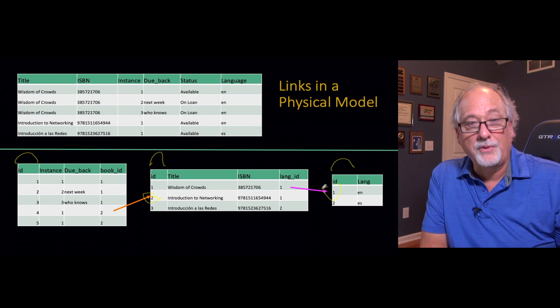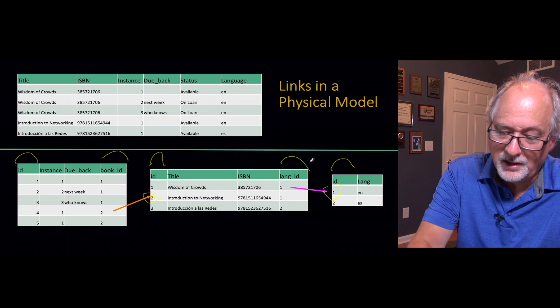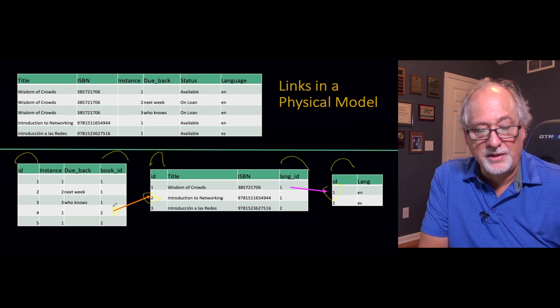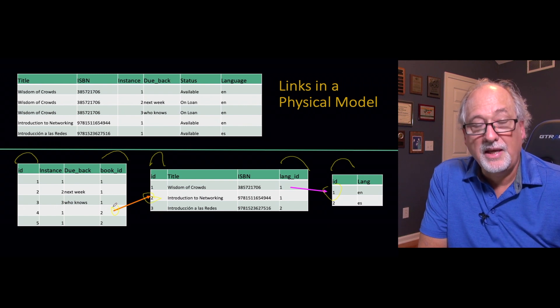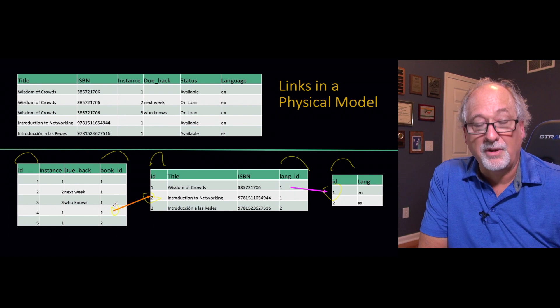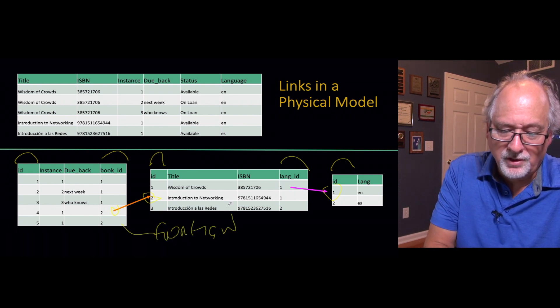Then what we do is put columns in that we call foreign keys. Those foreign keys are the starting point of the arrows. For example, book_ID. By convention, we name these by the name of the table, followed by an underscore, followed by the word ID. These are called foreign keys.